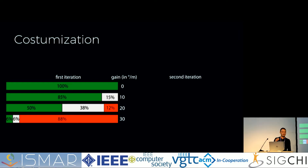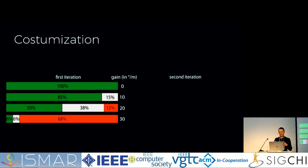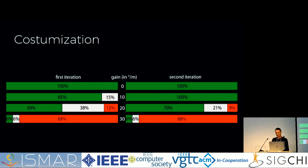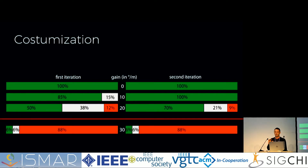We also looked at customization effects. We tested each gain twice, comparing the first and second iterations. Interestingly, in the first iteration only 50% stated 20 degrees per meter as being applicable, and 38% as neutral. In the second iteration, 70% stated they would accept such gains. The 30 degrees per meter did not change — that is already too far and you shouldn't go there.